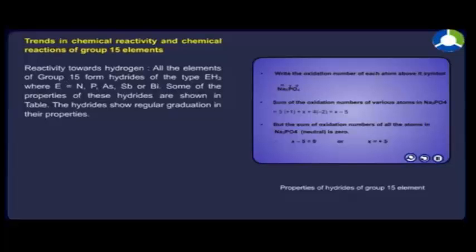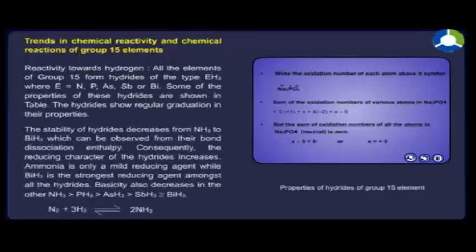The hydrides show regular graduation in their properties. The stability of hydrides decreases from NH₃ to BiH₃ which can be observed from their bond dissociation enthalpy. Consequently, the reducing character of the hydrides increases. Ammonia is only a mild reducing agent while BiH₃ is the strongest reducing agent amongst all the hydrides.